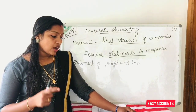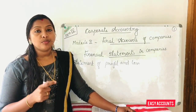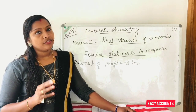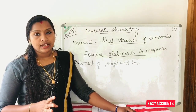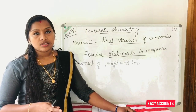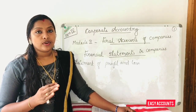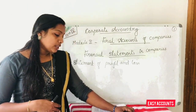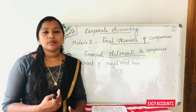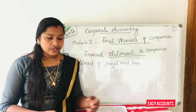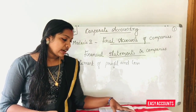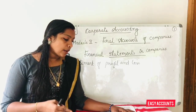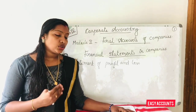Section 128 requires all companies to maintain, for every financial year, books of accounts and statements that give a true and fair view. We will study all the accounts under this section. A company will also maintain statutory books. These books are linked to the company's name.